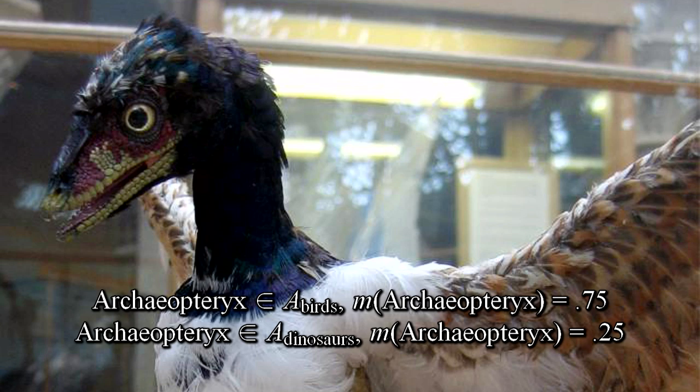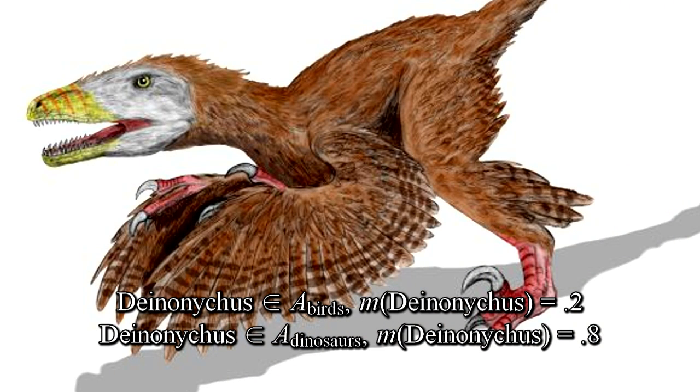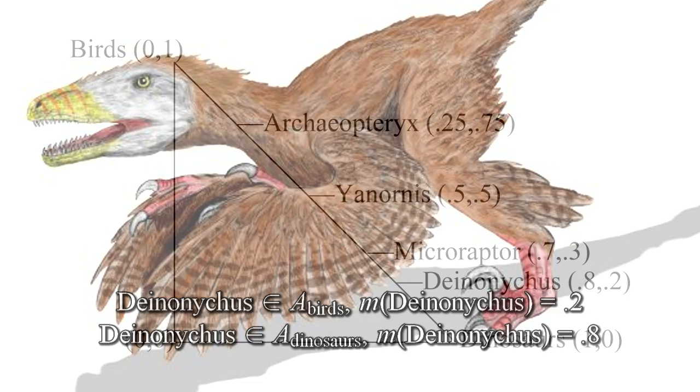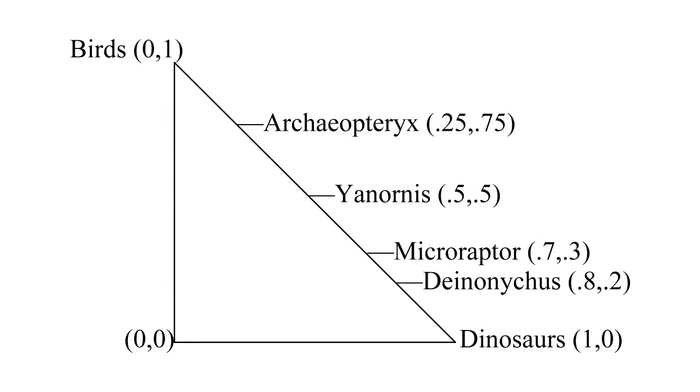Whereas Deinonychus may be considered only 20% bird and 80% dinosaur. We can graph out this fuzzy set, where a species with a membership of 1 in the bird set and 0 in the dinosaur set, for all birds, and vice versa for all dinosaurs. The transitionals would fit in along the line between the two.